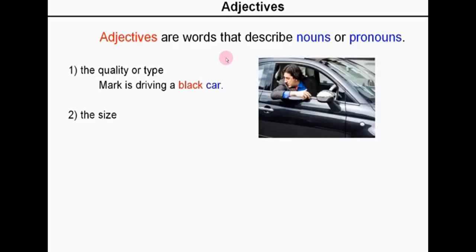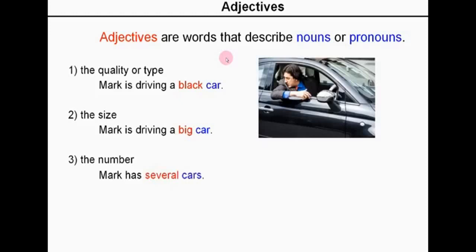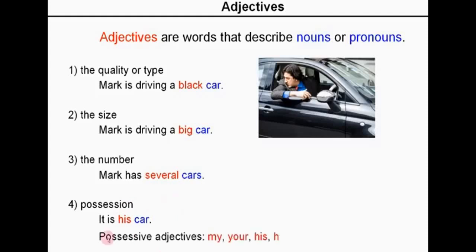An adjective can also describe the size: Mark is driving a big car. Or perhaps the number or quantity: Mark has several cars. Possession: It is his car — this is telling us that the car belongs to Mark. The possessive adjectives are my, your, his, her, its, our and their. There are lots of different types of adjectives — these are just a few examples.